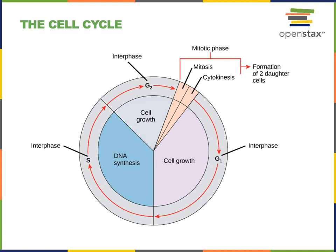In contrast to interphase, the mitotic phase of the cell cycle — or M phase — is when the cell will divide and produce two nuclei. The process of mitosis is the division of the nucleus, producing two nuclei inside of one cytoplasm. Then following mitosis, cytokinesis is the division of the cytoplasm, which will produce two new daughter cells.